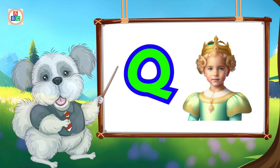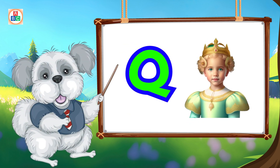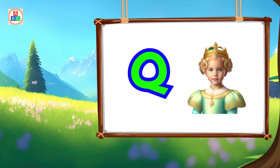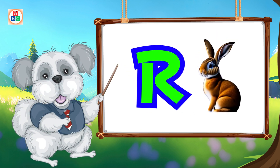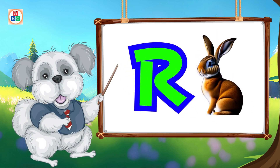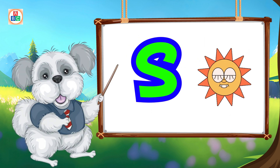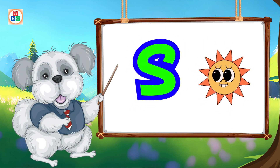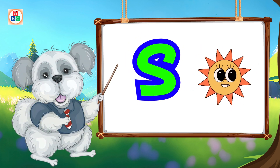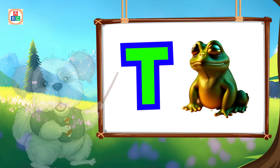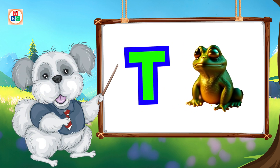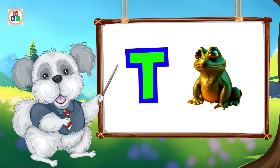Q is for queen, k-k-queen. R is for rabbit, r-r-rabbit. S is for sun, s-s-sun. T is for toad, t-t-toad.